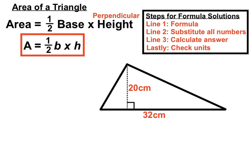This next one has a base of 32 centimeters all the way across the bottom there. This time our perpendicular height measurement, the height 90 degrees to the base, is actually kind of inside the triangle itself. And that's 20 centimeters. So we'll be using that for our perpendicular height this time.